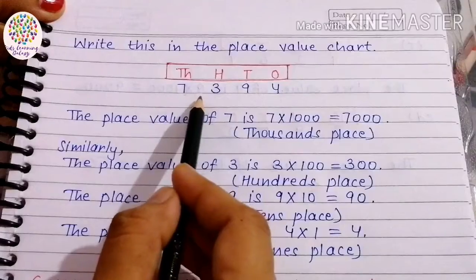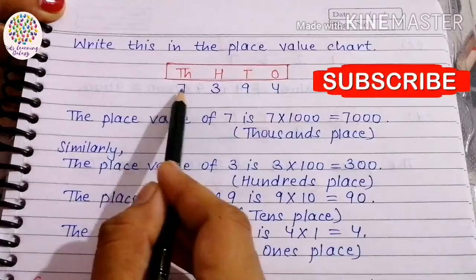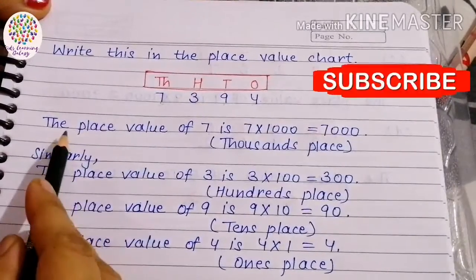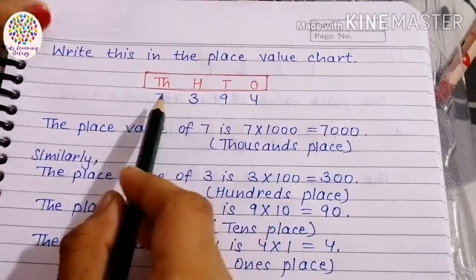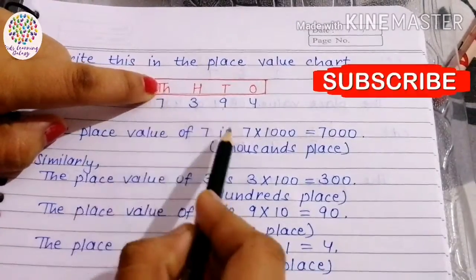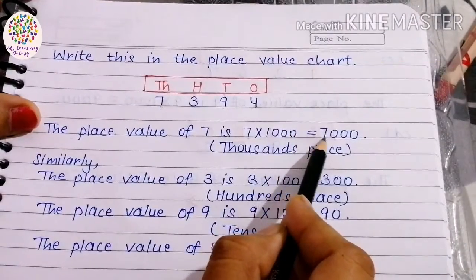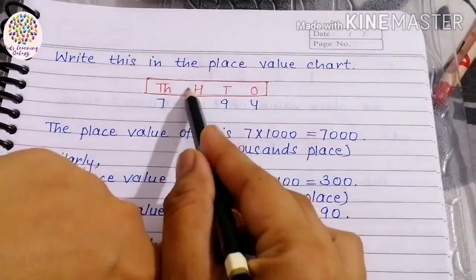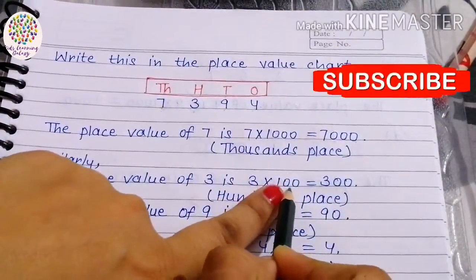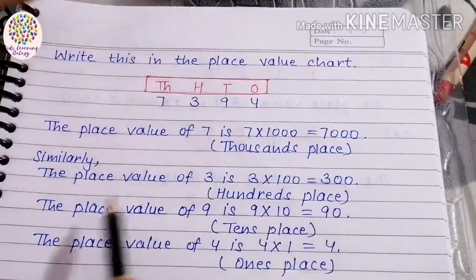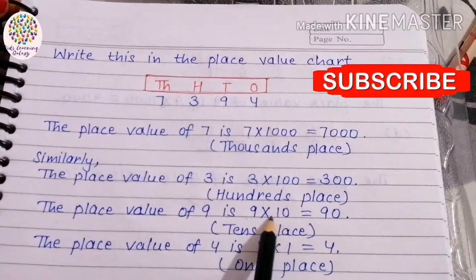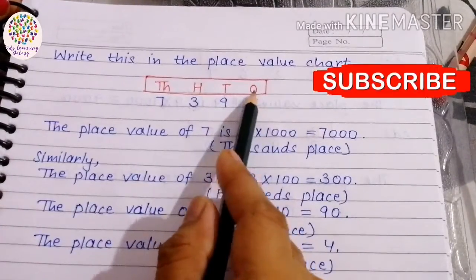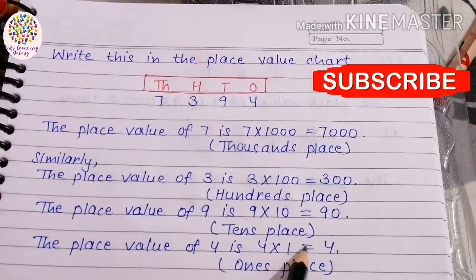Now we will find out the place value of each digit. Place value of 7: 7 is at thousands place, so 7 × 1000 = 7000. Place value of 3: 3 is at hundreds place, so 3 × 100 = 300. Place value of 9: 9 is at tens place, so 9 × 10 = 90. Place value of 4: 4 is at ones place, so 4 × 1 = 4.